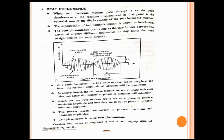This phenomenon is known as the beat phenomenon. When the two waves are in the same phase, they produce maximum amplitude. When they are in different phases, they produce minimum amplitude. This alternation between maximum and minimum amplitude is continuous — this is the beat phenomenon.